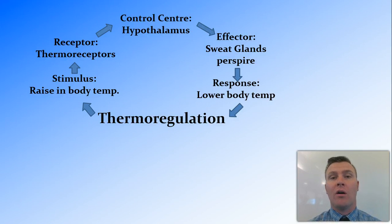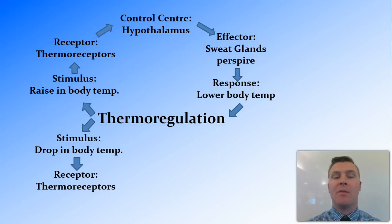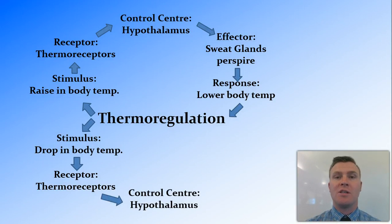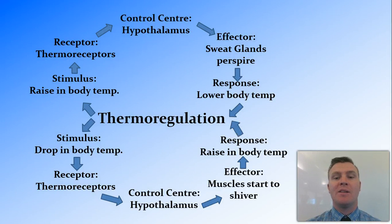There are similar yet opposite feedback loops. With thermoregulation, the opposite occurs when the stimulus is a drop in body temperature — the body gets too cold. The same thermoreceptors pick up that the body is too cold and send this message to the control centre, still the hypothalamus. However, having received a different stimulus, the hypothalamus has a different response: it sends a message to the effectors, which are the muscles, causing them to start contracting — what we call shivering. This shivering converts chemical energy into heat energy, causing a rise in body temperature and a return to the steady state at 37 degrees Celsius.